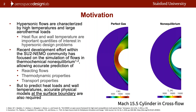These boundary conditions typically constitute constraints in the hypersonic vehicle design process. SU2-NEMO is our CFD code for non-equilibrium modeling, focused on prediction of reacting flows, thermodynamic properties for non-equilibrium flows, and transport properties. This is highlighted in a canonical comparison case showing temperature contours for a perfect gas flow versus a non-equilibrium flow over a cylinder — the non-equilibrium flow shows much lower temperature due to relaxation processes and a smaller shock standoff distance.